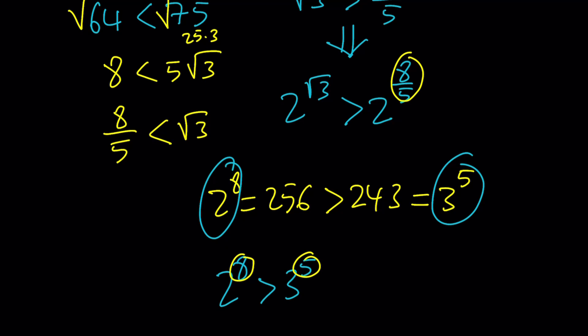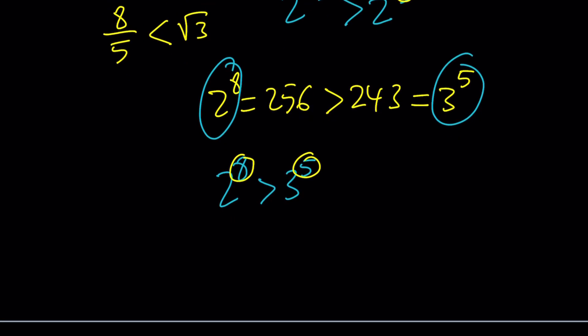Raise both sides to the power of 1 5th, or take the 5th root of both sides. Either way, you're going to get the same thing, and this is going to give us what we need. In other words, we get 2 to the power of 8 over 5 is greater than 3. Awesome.